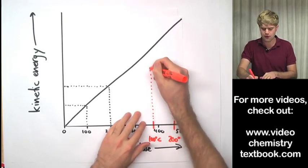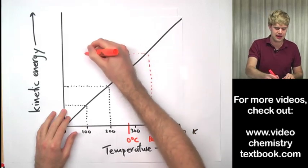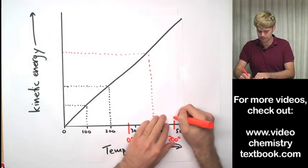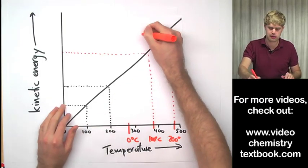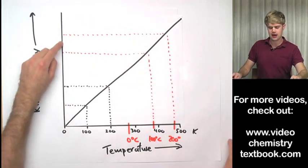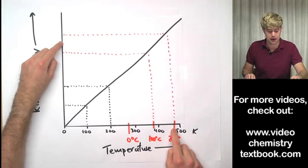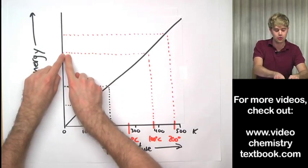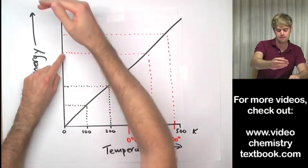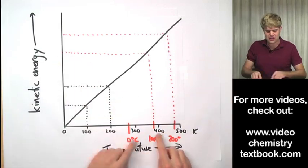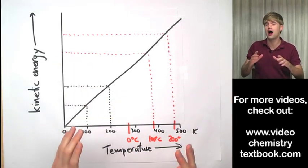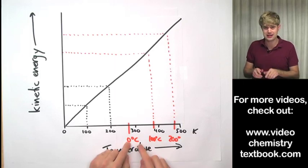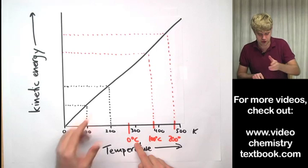Now let's look at what happens when I double the Celsius temperature from 100°C to 200°C. Going up on the graph at 100°C and then at 200°C, you can see that although I've doubled the Celsius temperature, I haven't doubled the amount of kinetic energy that the gas particles have. In order to have doubled the kinetic energy, it would have to be way beyond what the graph shows. So when I double the Celsius temperature — or Fahrenheit, it's the same thing — I don't double the kinetic energy, which means I also don't double the pressure or the volume. That's because both Fahrenheit and Celsius have their zero starting in the middle of the scale, not at zero kinetic energy.